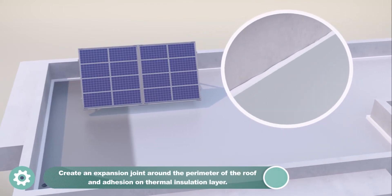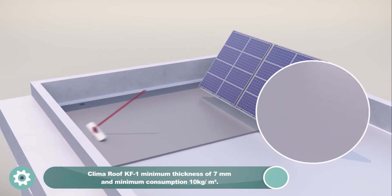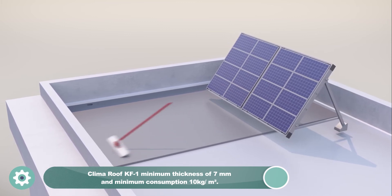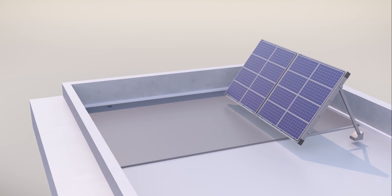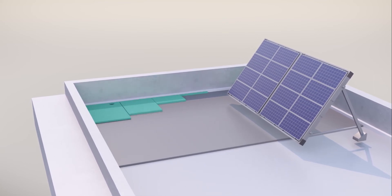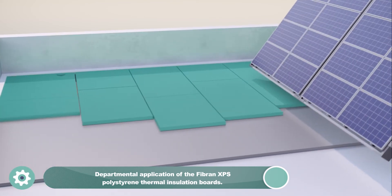Apply Klima Roof KF1 with a minimum thickness of 7 mm over the entire surface. The Fibrin XPS polystyrene thermal insulation boards should be installed using the offset or staggered joints method. The boards used are made of extruded polystyrene of high mechanical strength.